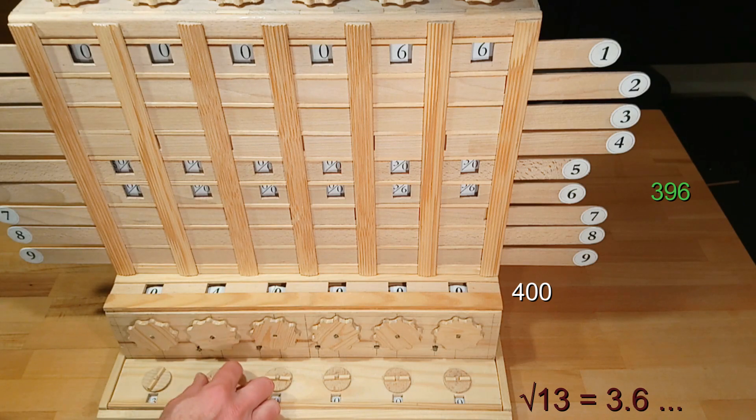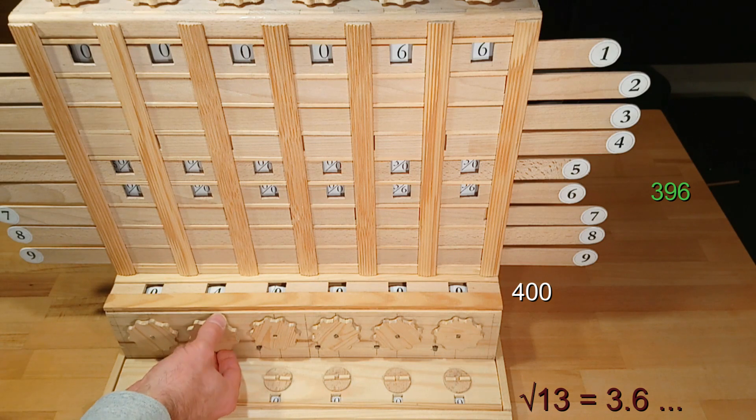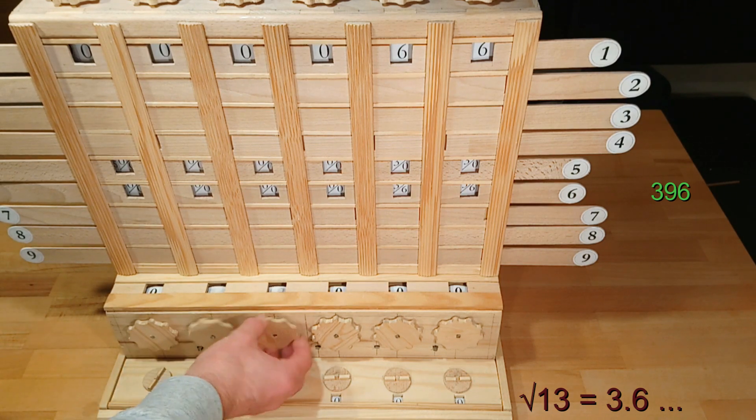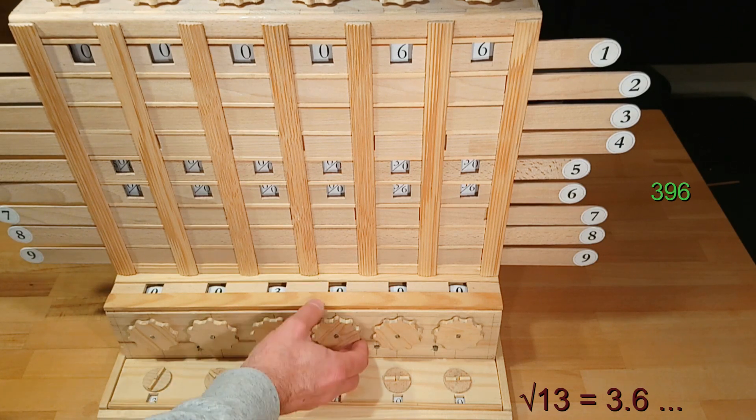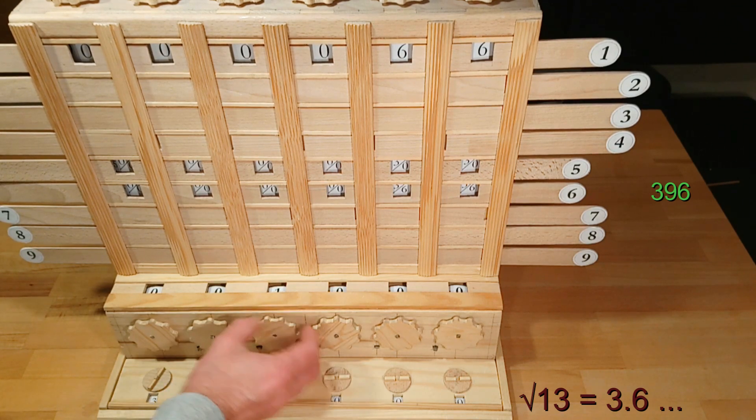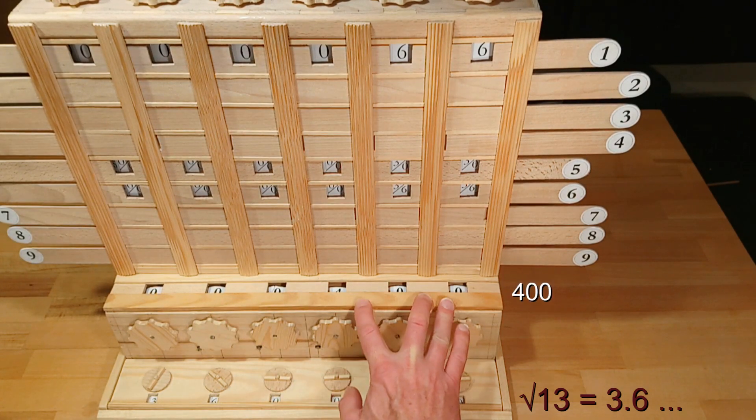I'm entering it in the result memory. Now we have to subtract 396 from 400. And again we have 400 left in the adder.